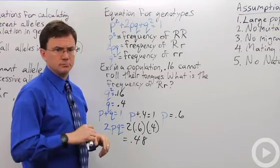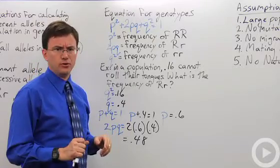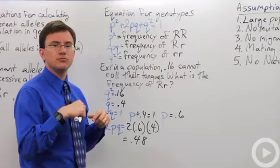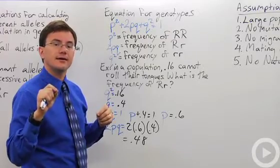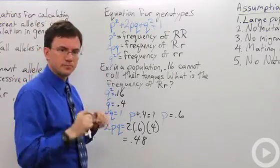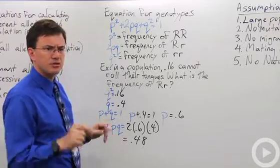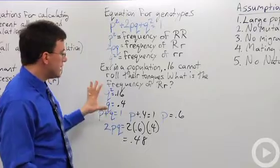So, if they say, 0.91 can roll their tongues, you know that 0.09 cannot. And that's what you're supposed to solve for. A little trick that I'm telling you guys, I don't tell it to my own students. I want to trick them.